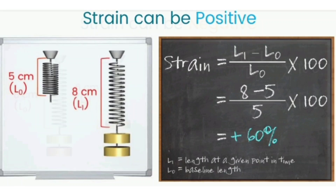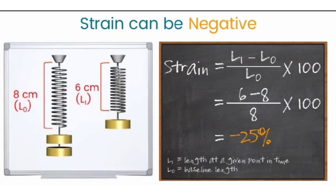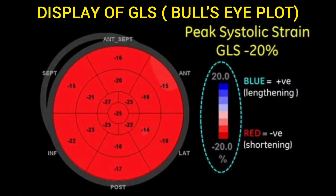Strain value is usually measured in percentage and it can be positive as well as negative. Among all the chambers, LV GLS is the most frequently performed. All of you must be familiar with the 17-segment model of LV, in which LV is divided into three sections — basal, mid cavity, and apex — which are further divided into 17 segments. With the help of LV GLS, we are able to assess the myocardial function of each segment of LV individually.